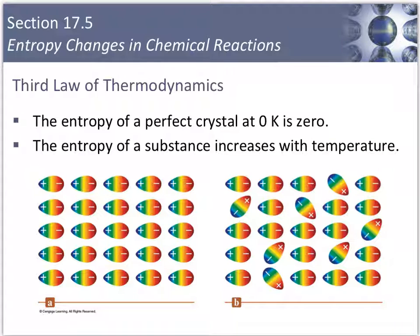This brings us to the third law of thermodynamics. The entropy of a perfect crystal at 0 Kelvin is 0. A perfect crystal is shown here in diagram A. Its internal arrangement is absolutely regular. Every particle is in its place.